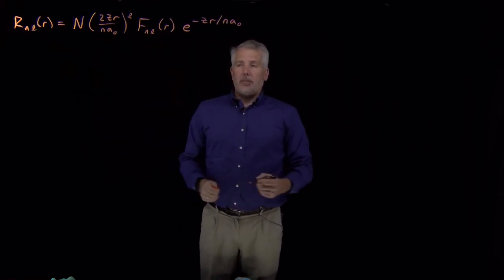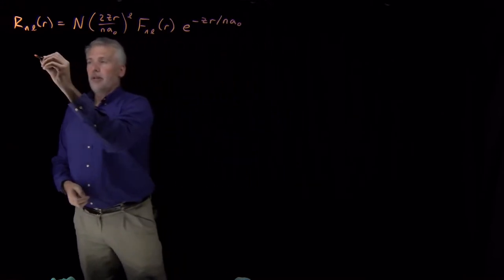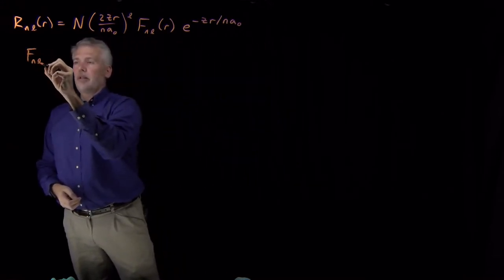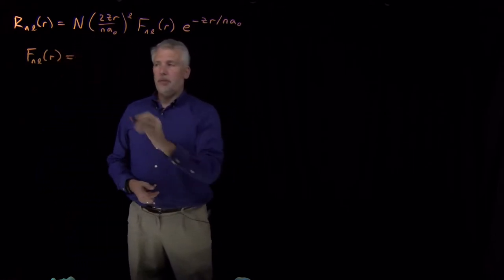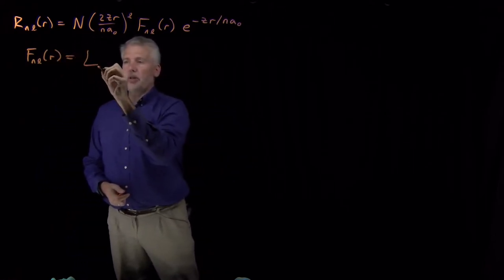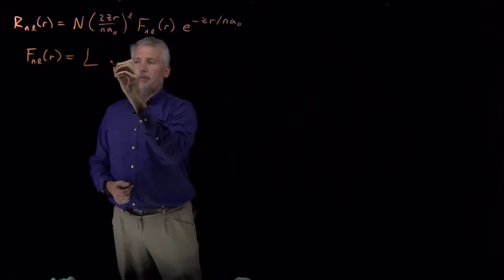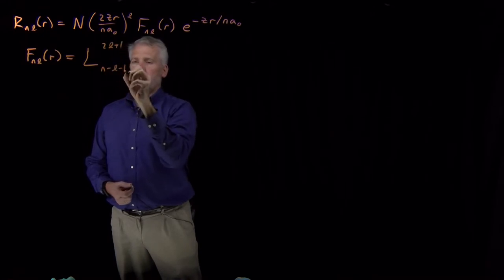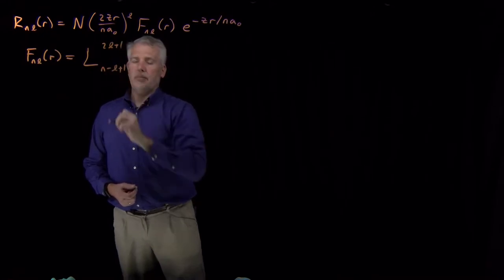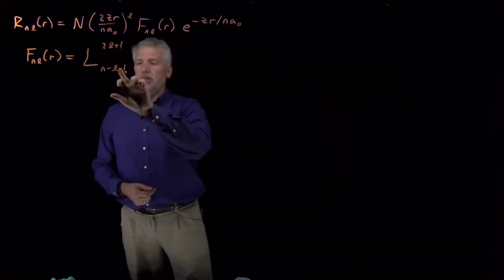It turns out that the polynomial portion of this wave function — this function we've called f — can be determined from the value of something called a Laguerre polynomial. The subscript index is n minus l minus 1.